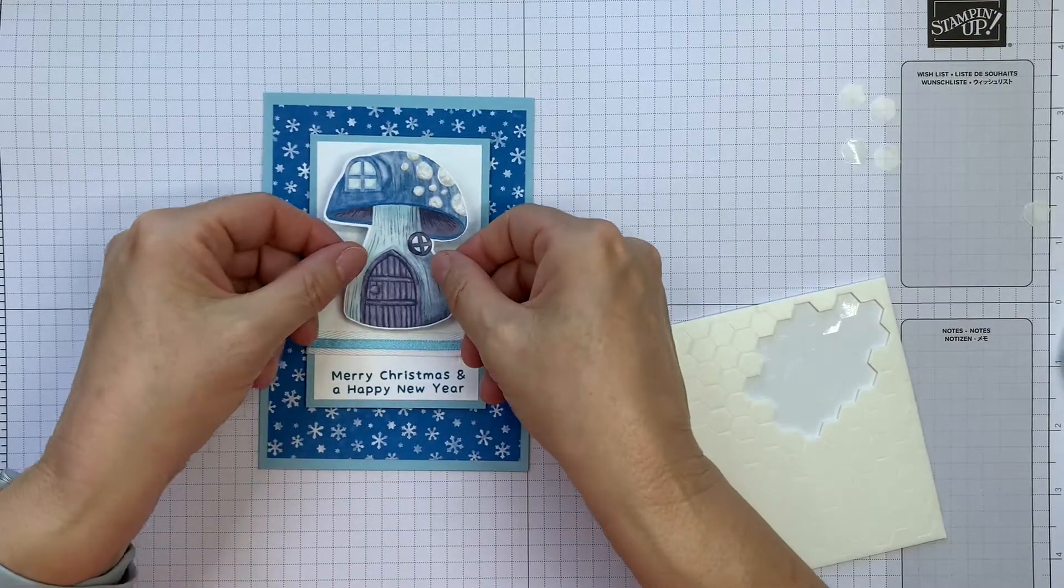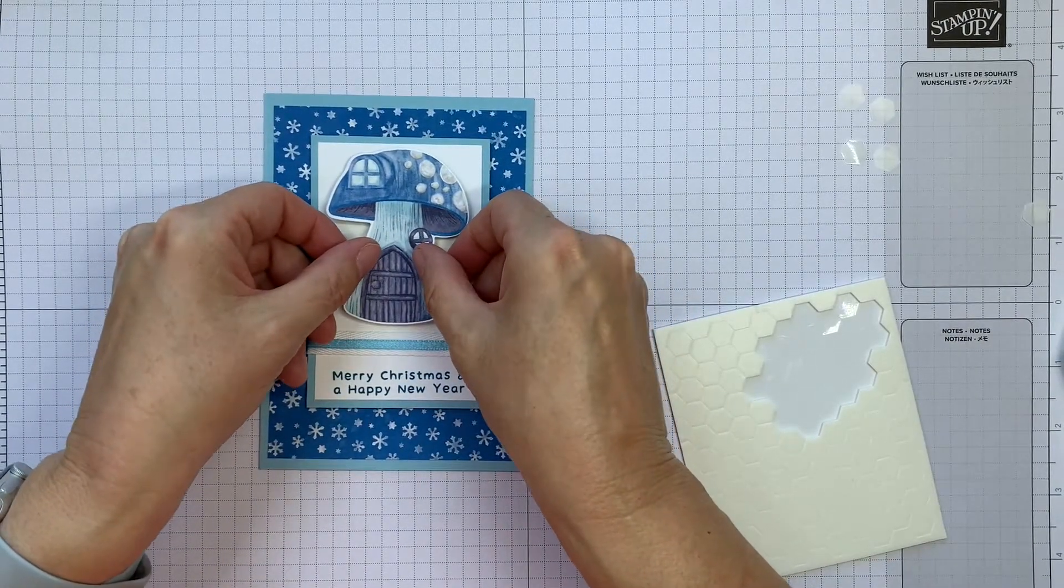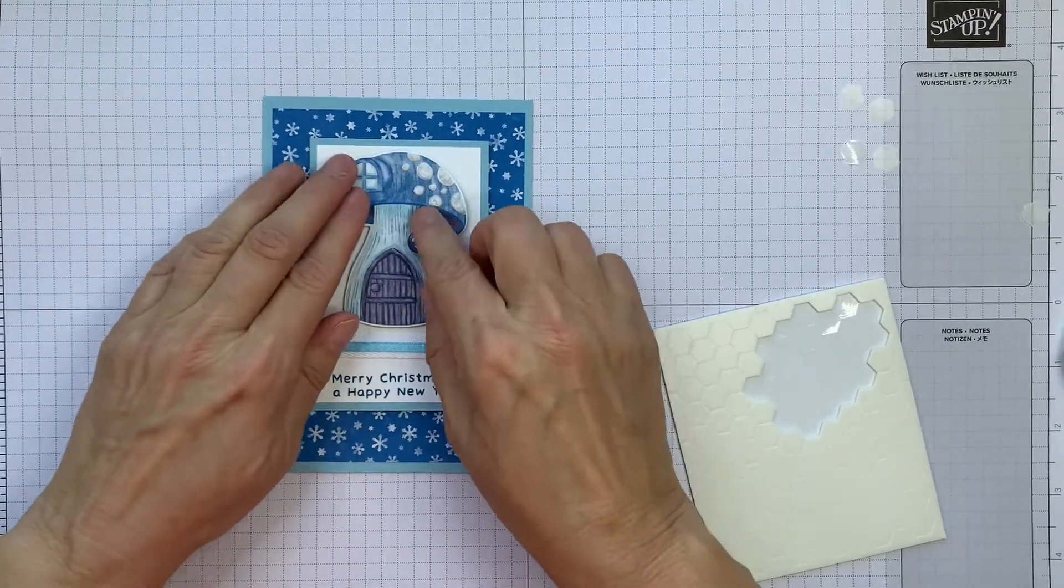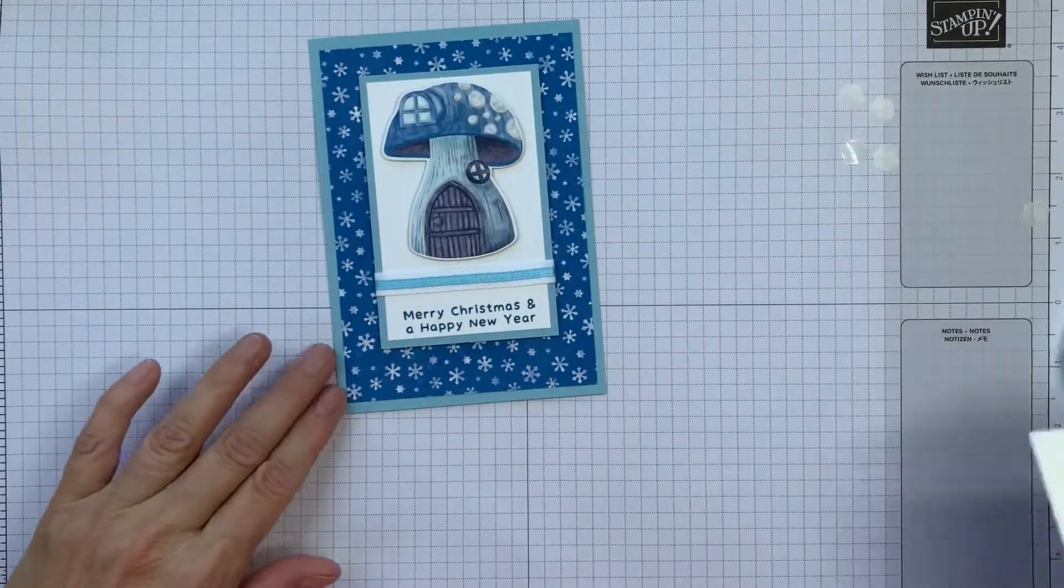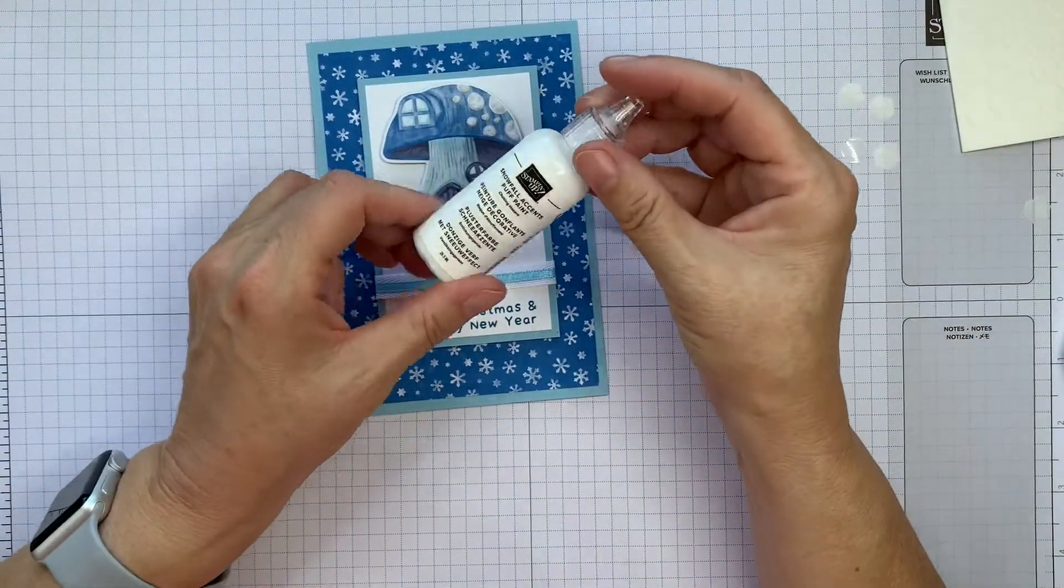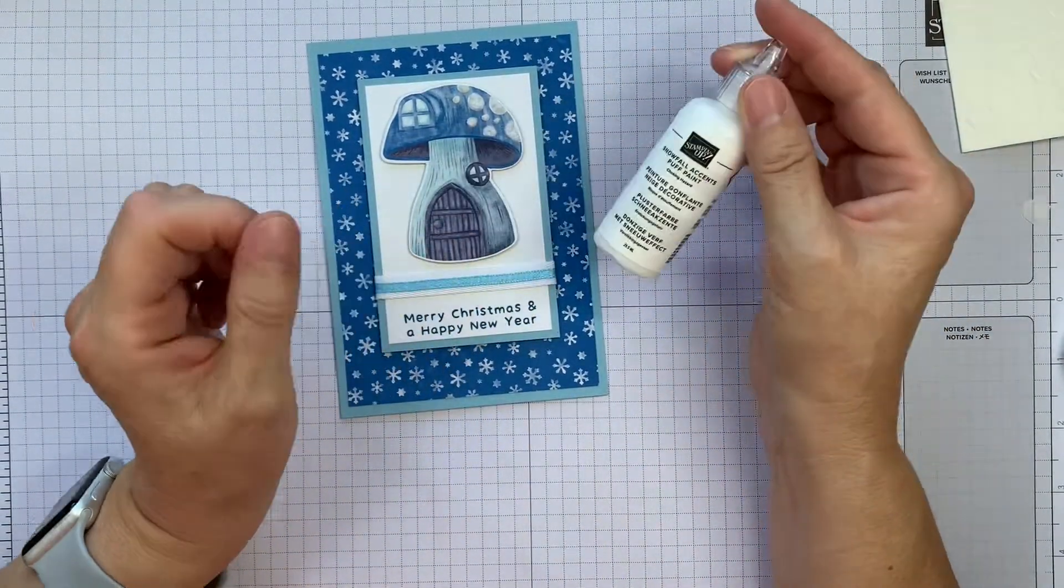And there we are, we've got a little bit of extra dimension on our little toadstool house. So I hope that gives you a few tips for how to use this Snowfall Accents Puff Paint.